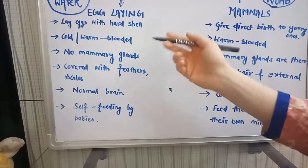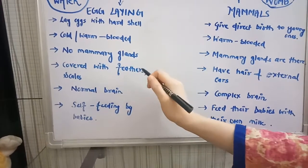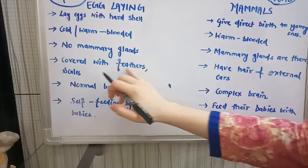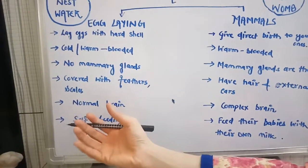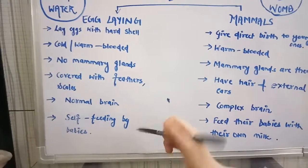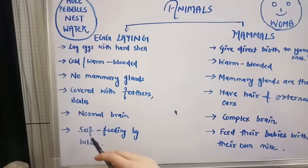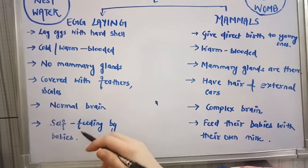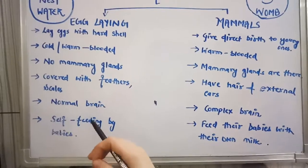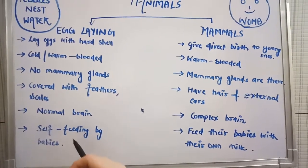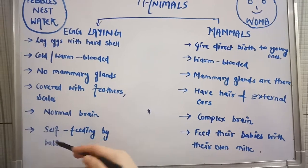Egg-laying animals won't have any mammary glands, so they won't be able to feed their young. Their whole body is covered with feathers or scales — birds are covered with feathers, and snakes are covered with dry scales. They have normal brain functioning and are not well-developed enough to take care of their babies. Their babies are mostly self-feeding, except for birds, which feed their babies beak to beak.